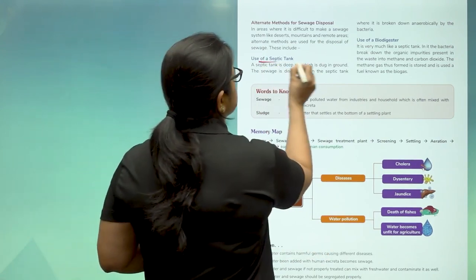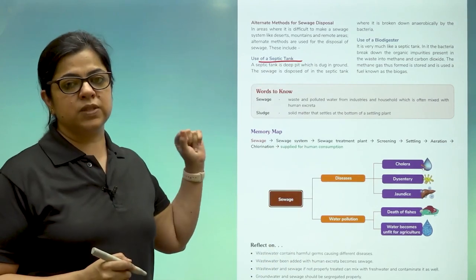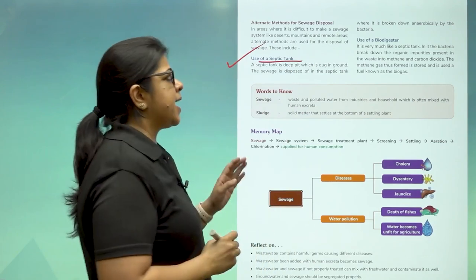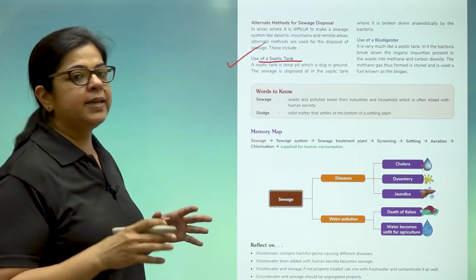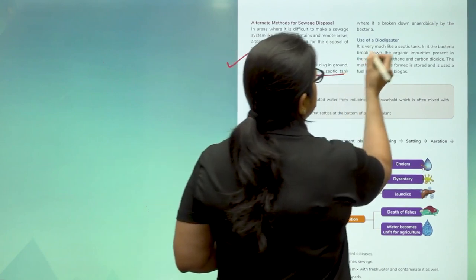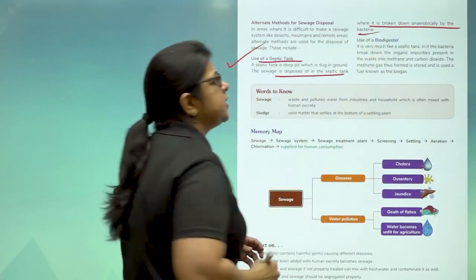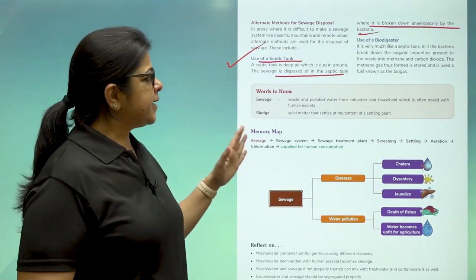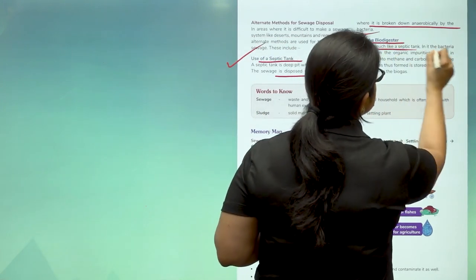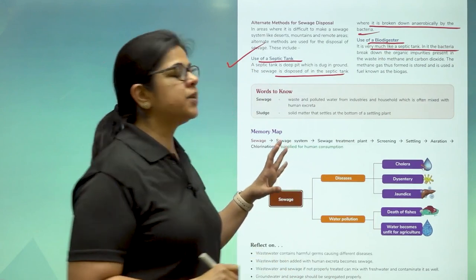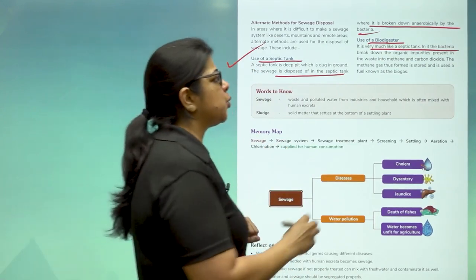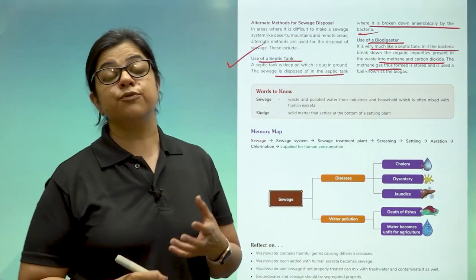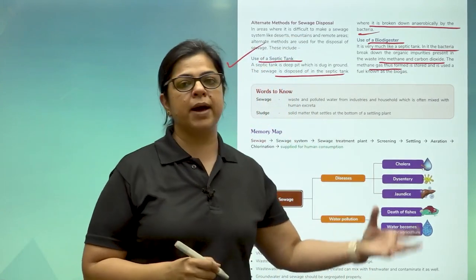There are also alternate methods of sewage disposal. The first is the use of a septic tank, in which a deep pit is dug in the ground and the sludge is anaerobically broken down by bacteria. The second is using a biodigester, much like a septic tank, in which bio waste is broken down to methane and carbon dioxide. This methane gas is stored as a fuel called biogas.